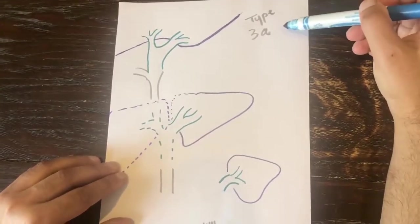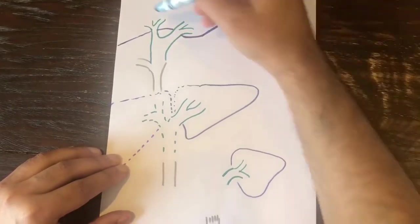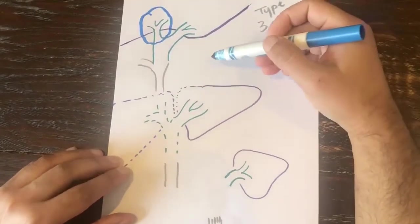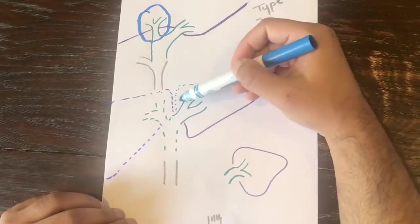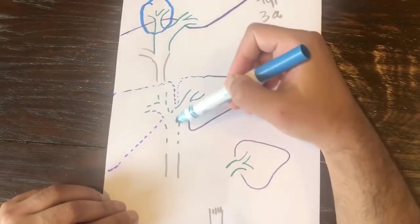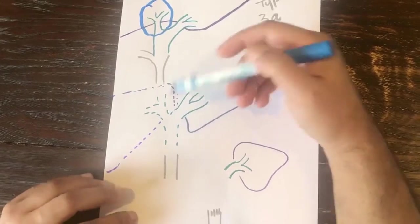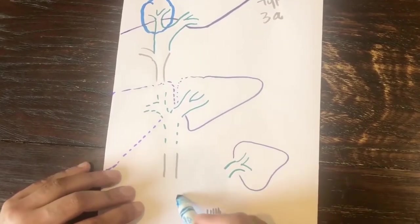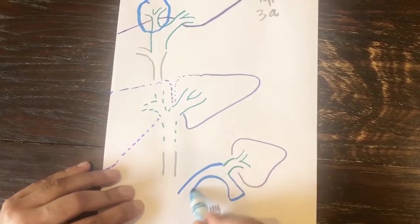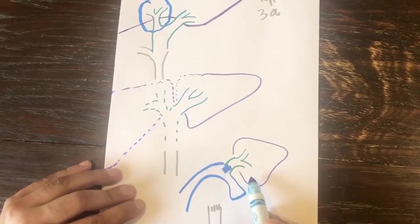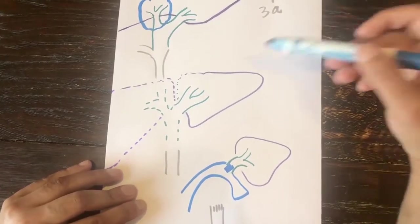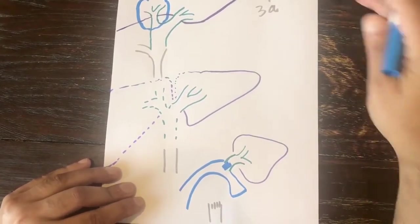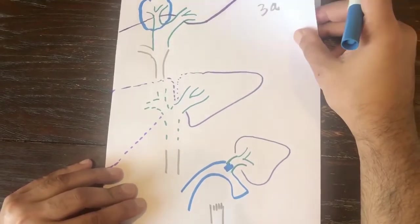Now if this patient has a Type 3A, the tumor is in the right hepatic duct. So what you do is this patient would need a right lobe resection with the resection of the right hepatic duct and the common hepatic duct. Close the distal end — you're left with the left lobe of the liver — and you're going to perform a hepatico-J anastomosis with the left hepatic duct. The operation performed was a right liver resection and a hepatico-J anastomosis with the left hepatic duct.